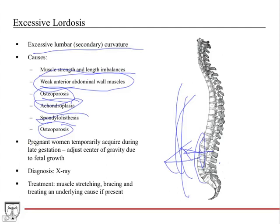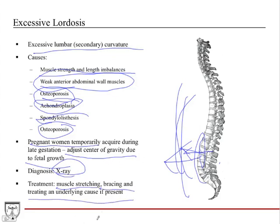Pregnant women can temporarily acquire excessive lordosis during late gestation — more in the late second trimester and third trimester. This is a natural adjustment the body makes to shift the center of gravity due to fetal growth, as significant weight in the abdomen and pelvis offsets the center of gravity. It helps maintain proper posture and balance, and readjusts after birth. Diagnosis is by x-ray. Treatment includes muscle stretching and strengthening, bracing, or treating the underlying cause such as calcium and vitamin D for osteoporosis.